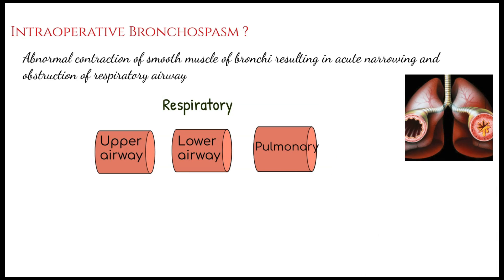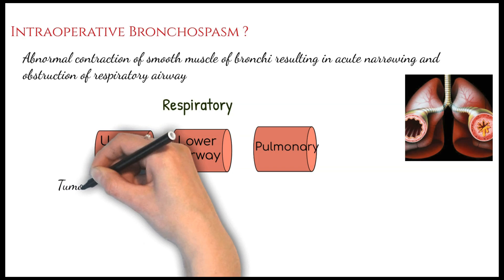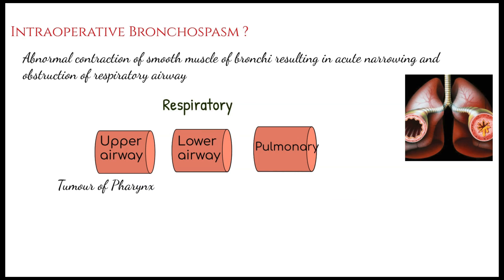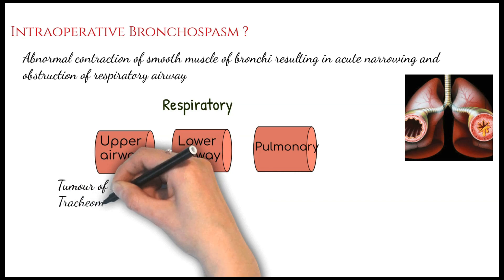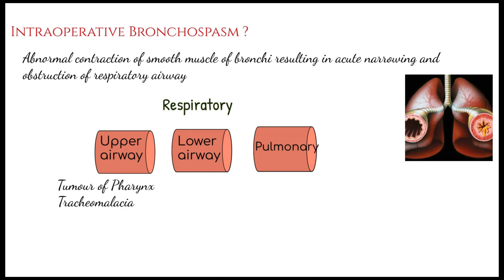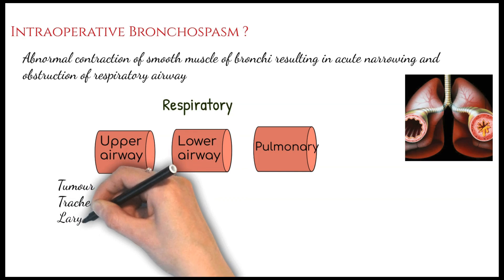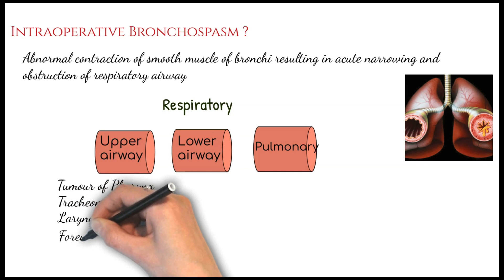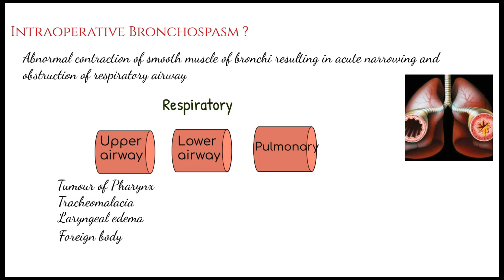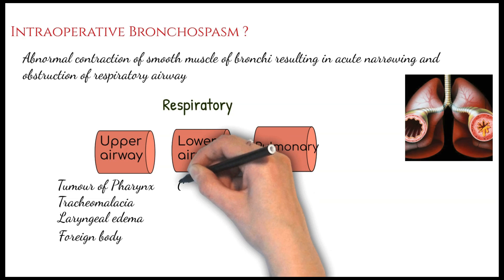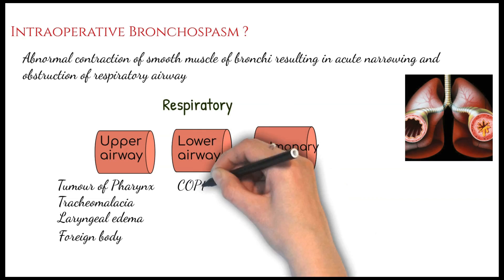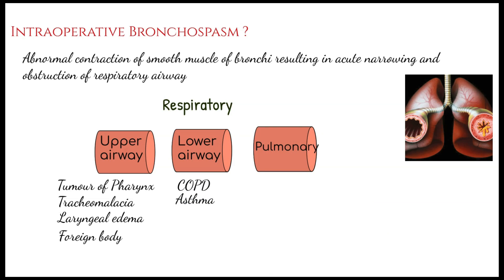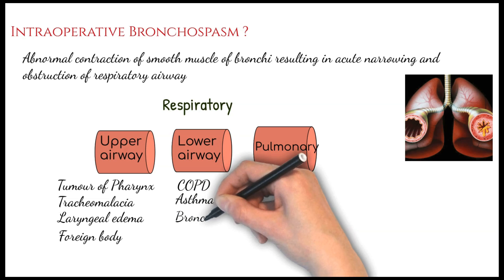These three levels are the reasons which can lead to bronchospasm. As far as the upper airway is concerned, there can be tumors of the pharynx, weakening of the tracheal muscles (tracheomalacia), edema of the laryngeal tract, and sometimes a foreign body in the upper airway can also provoke bronchospasm. As far as the lower airway is concerned, it can occur due to COPD, patients with a history of bronchial asthma, and patients having chronic cough for more than three months, known as bronchitis.